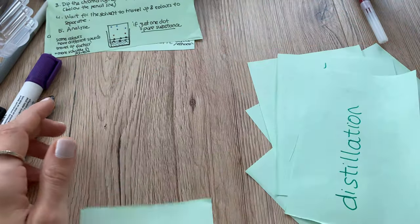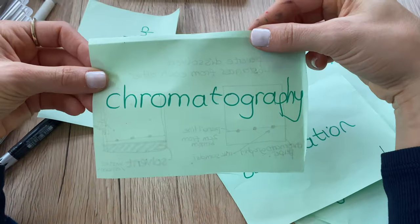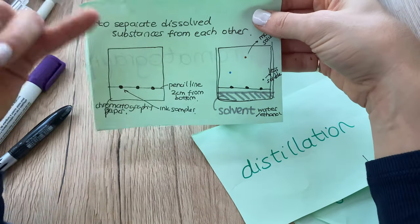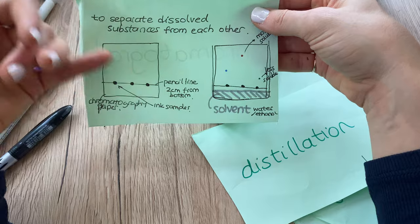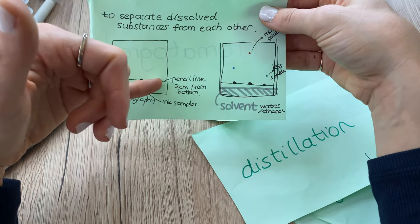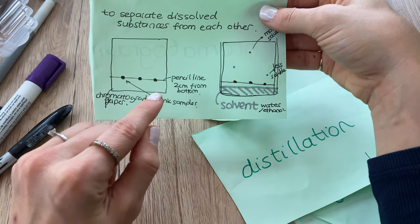That's the basis of what it's working on and the last technique we've learned was chromatography. This technique is to separate dissolved substances from each other. All you need to do is have your chromatography paper, draw a pencil line and have your ink samples there.